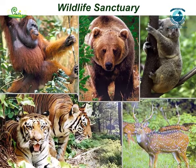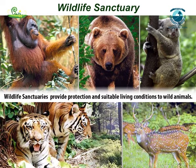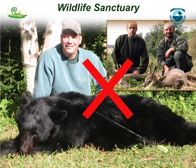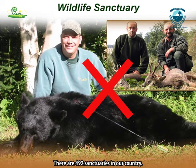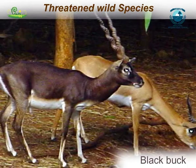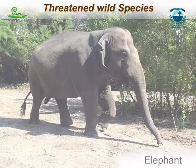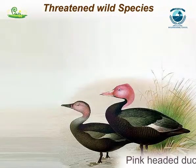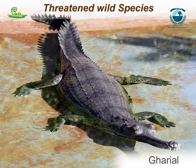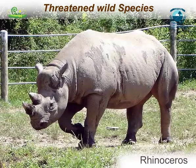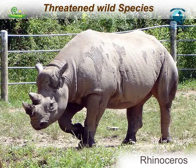Wildlife sanctuaries provide protection and suitable living conditions to wild animals. These sanctuaries are places where killing or capturing of animals is strictly prohibited, but harvesting of timber and collection of minor forest products are allowed. There are 492 sanctuaries in our country. Some of the threatened wild animals like black buck, white-eyed buck, elephant, golden cat, pink-headed duck, gharial, marsh crocodile, python, rhinoceros, etc. are protected and preserved in our wildlife sanctuaries.